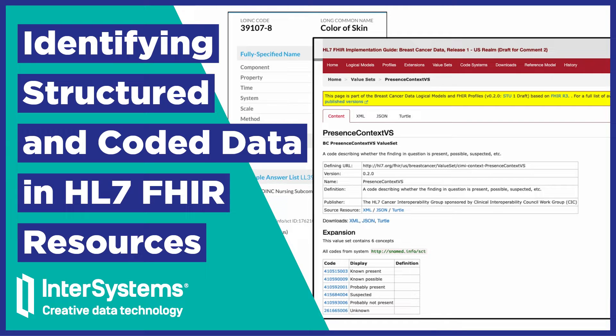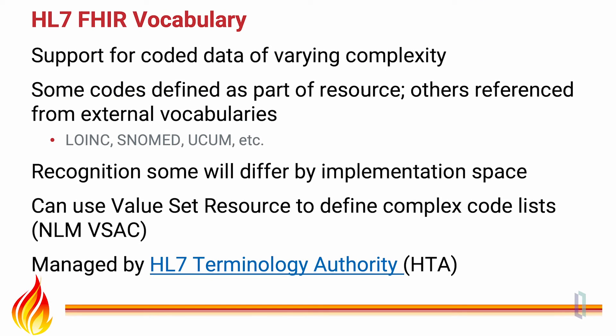Next, we'll cover structured and coded data in FHIR resources. The HL7 FHIR vocabulary supports coded data of varying complexity. Some codes are defined as part of the FHIR resource, while others are referenced from external vocabularies such as LOINC, SNOMED, and UCUM. The fact that some will differ by implementation space should be recognized, and the FHIR value set resource can be used to define complex code lists.